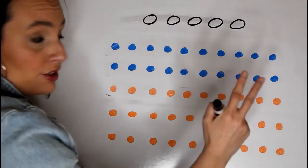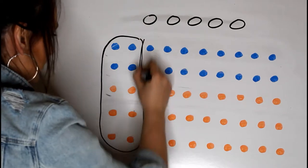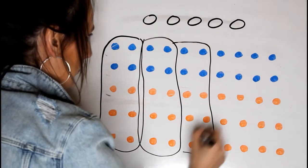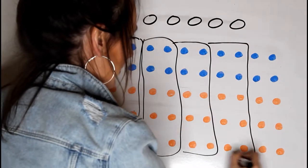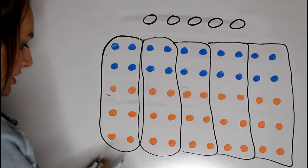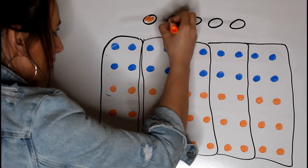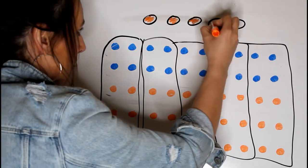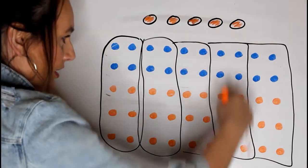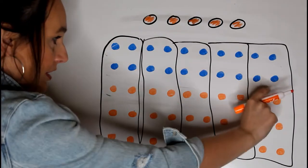Scenario two: the lines can be drawn like this. Now at first glance this looks fair, but if you look closely this scenario gives the state five red reps because in every district the red has the majority. So this would cut out 40 percent of the voting population.